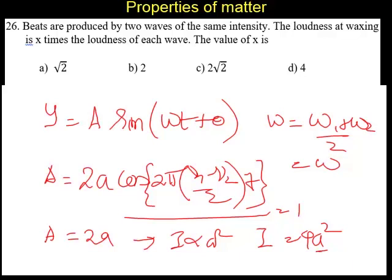A is the amplitude of each wave, so the intensity of each wave is A². The beat intensity is 4A², which is 4 times the original intensity. Therefore, the beat intensity is 4 times the intensity of a single wave.